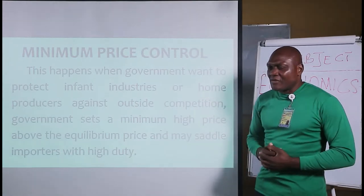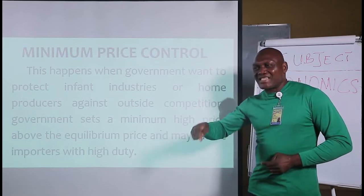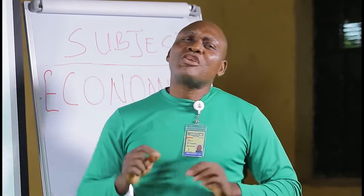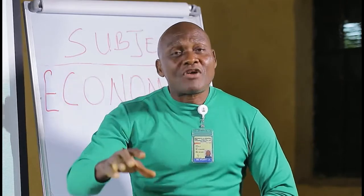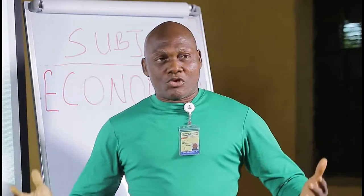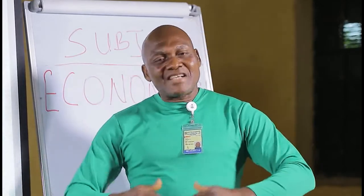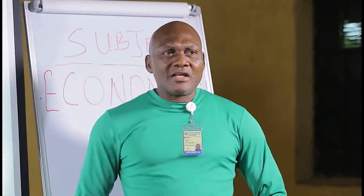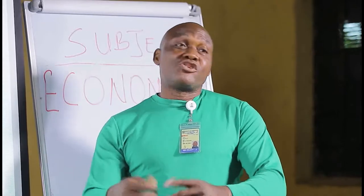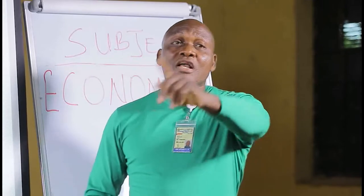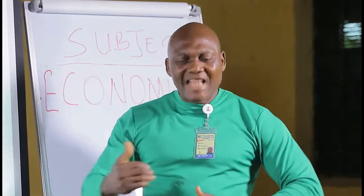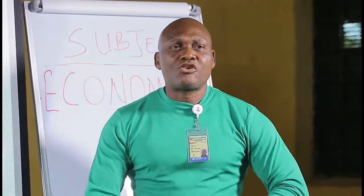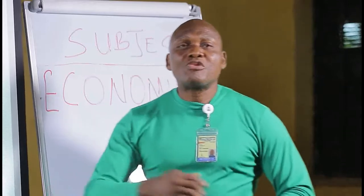Infant industries are those industries in our country which cannot compete favorably with already established ones abroad. For example, when comparing local fabric to imported Holland fabric, people prefer the imported brand. So when government wants to protect these home producers from foreign competition, government goes into minimum high price — setting a price over and above the equilibrium price.